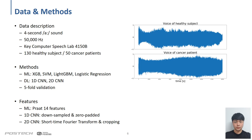Next is the method section. The voice samples used in this study are 4-second long signals of a sound, recorded at 50 kHz with advanced speech recording equipment. There are 130 healthy subjects and 50 cancer patients. The figure on the right shows signal plots from each class. Machine learning algorithms used in this study include extreme gradient boosting, support vector machines, light GBM, and logistic regression methods. Deep learning algorithms are 1D CNN and 2D CNN, namely convolutional neural networks. The detailed structures of the nets are discussed in the later parts.